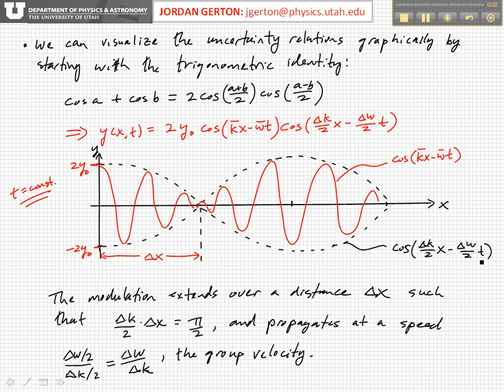Okay, and so now we have this envelope wave function which is given by this cosine term, which multiplies the wave that corresponds to the average wavelength of the two waves that we use to add and make the superposition wave.